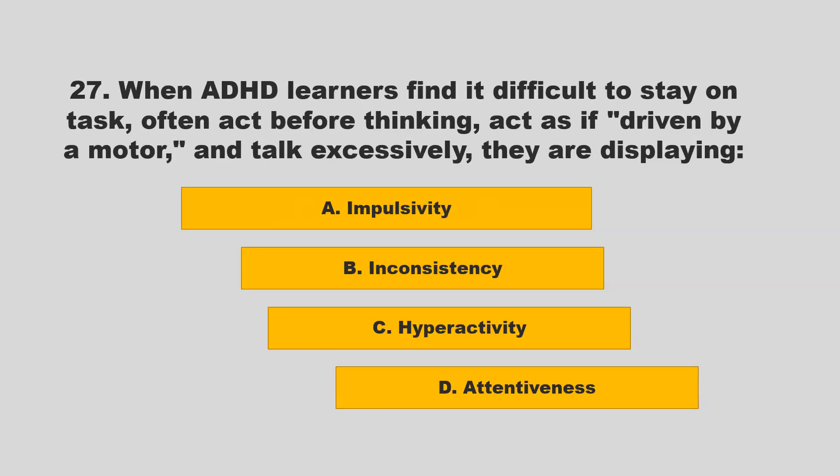When ADHD learners find it difficult to stay on task, often act before thinking, act as if driven by a motor, and talk excessively, they are displaying: A) impulsivity; B) inconsistency; C) hyperactivity; D) attentiveness. If you chose C — hyperactivity — you are correct.